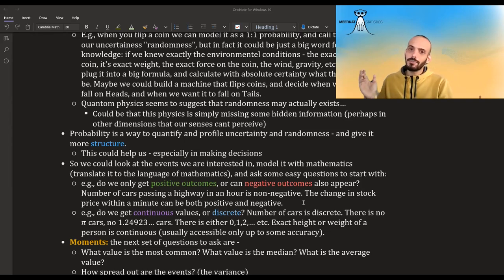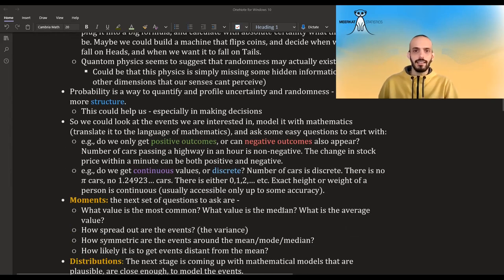It could be that, you know, practically it's not infinite, but for all practical purposes, we can model it with countable infinite. But for example, the exact height or weight of a person is continuous. Again, for all practical purposes, in reality, we can only measure it up to some accuracy, but for all practical purposes, we can think of it as continuous.